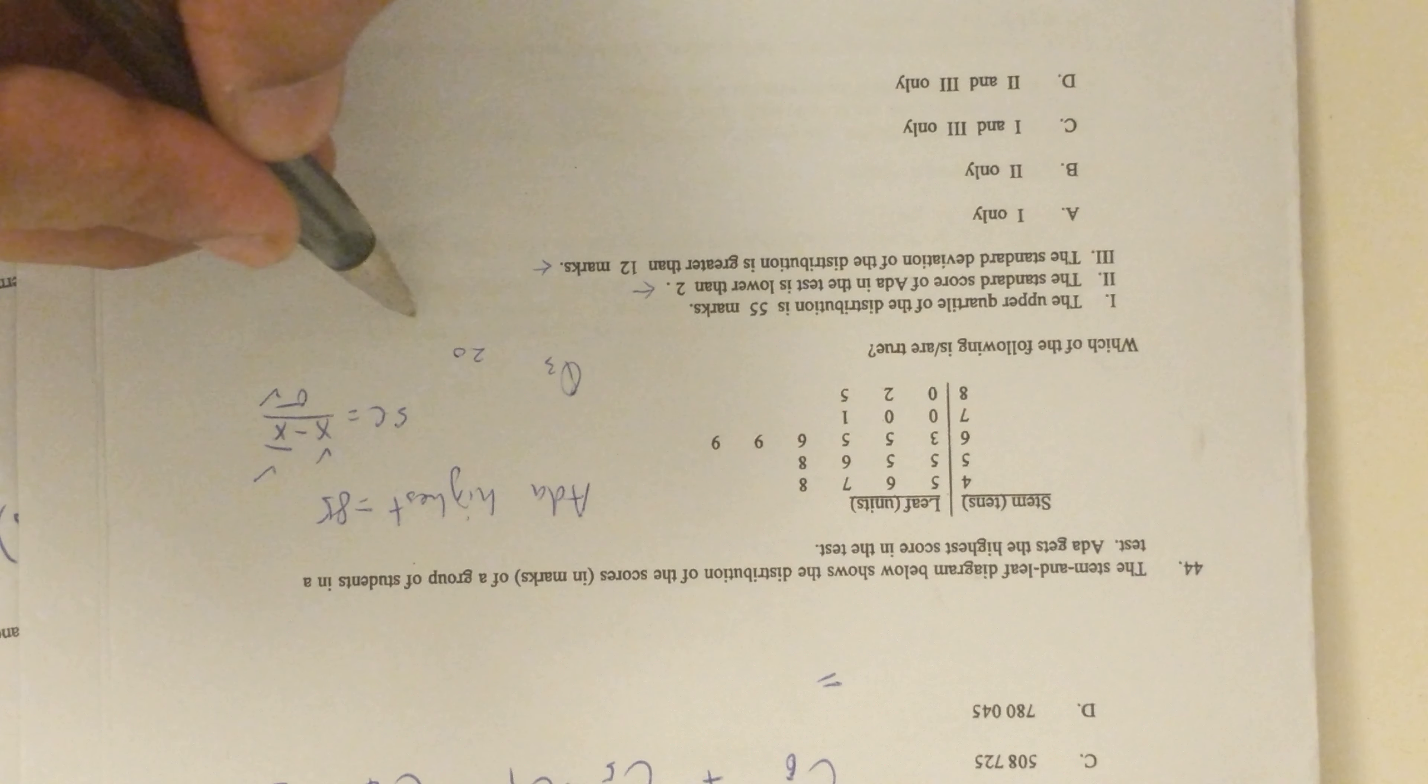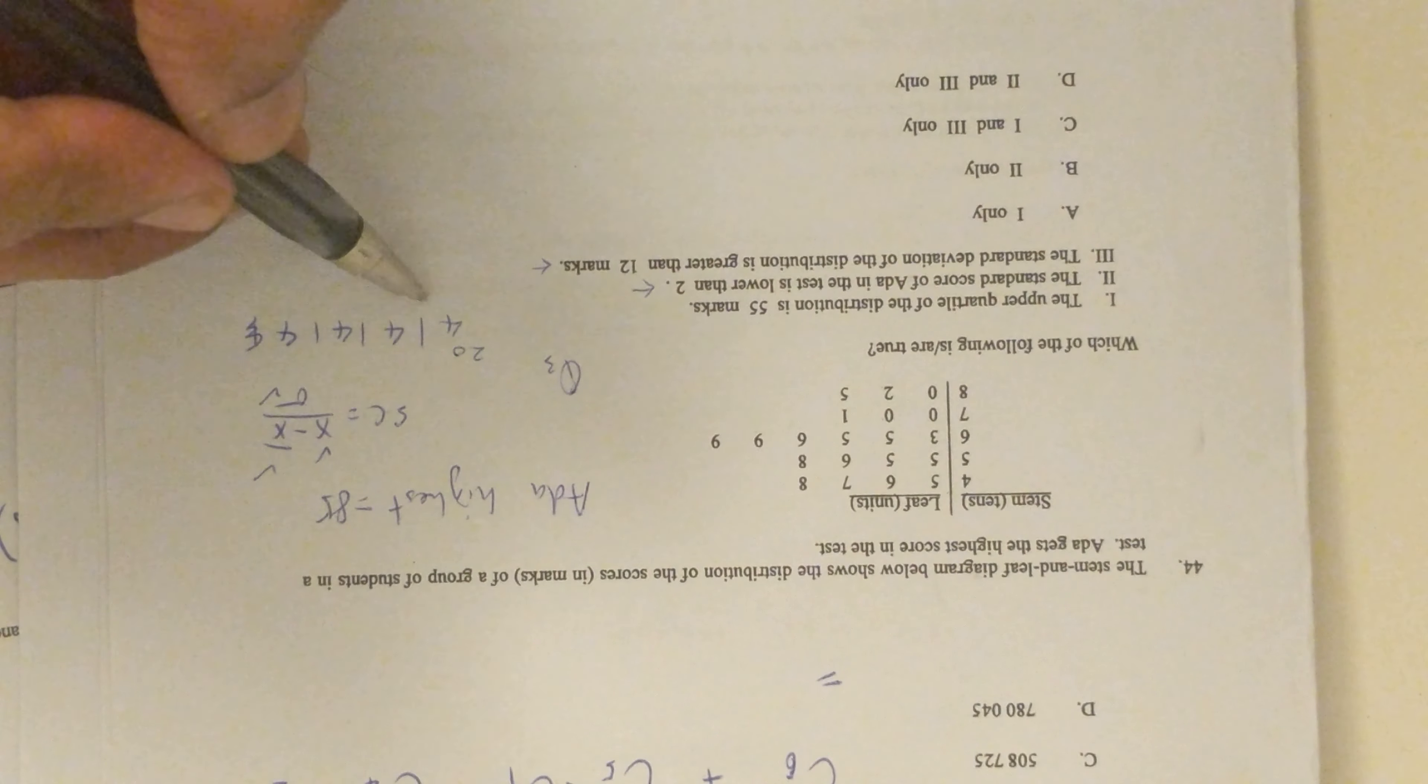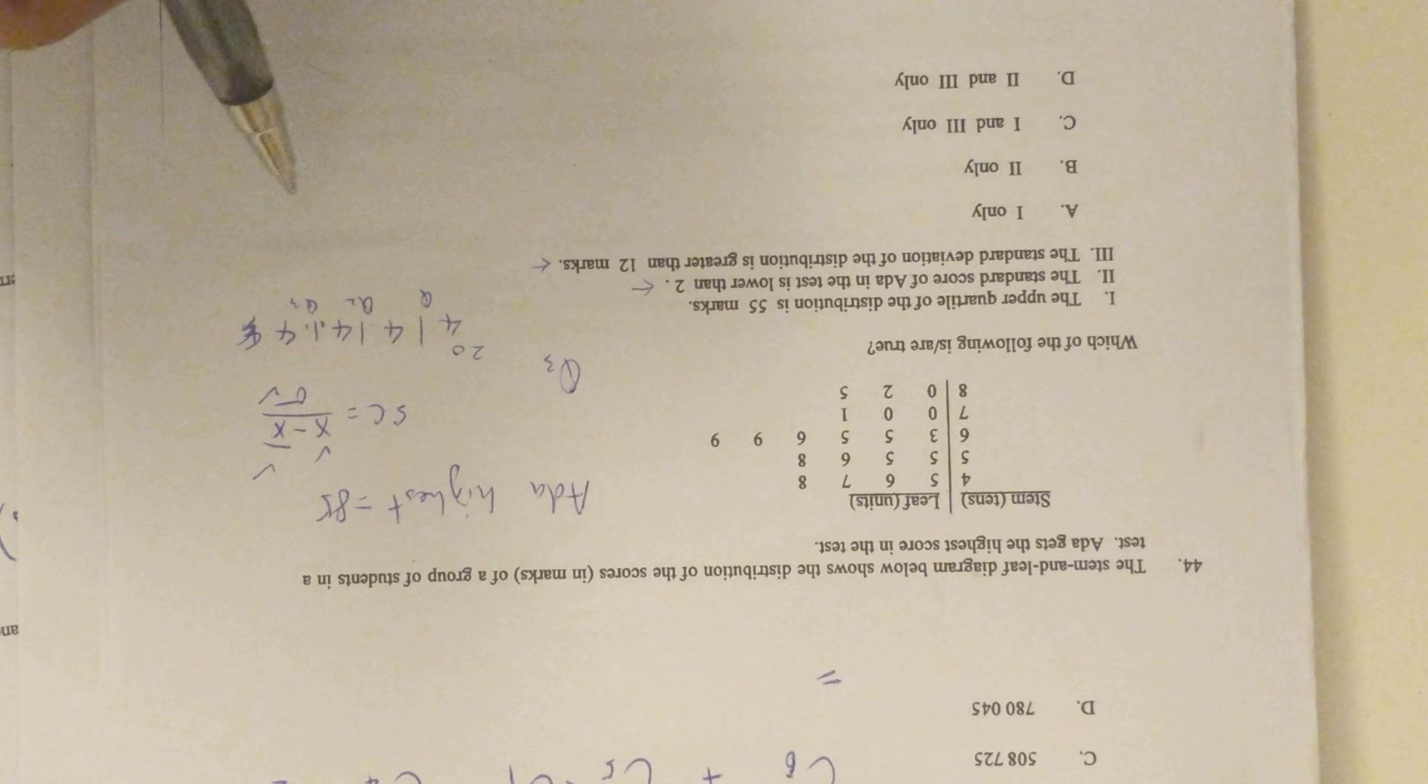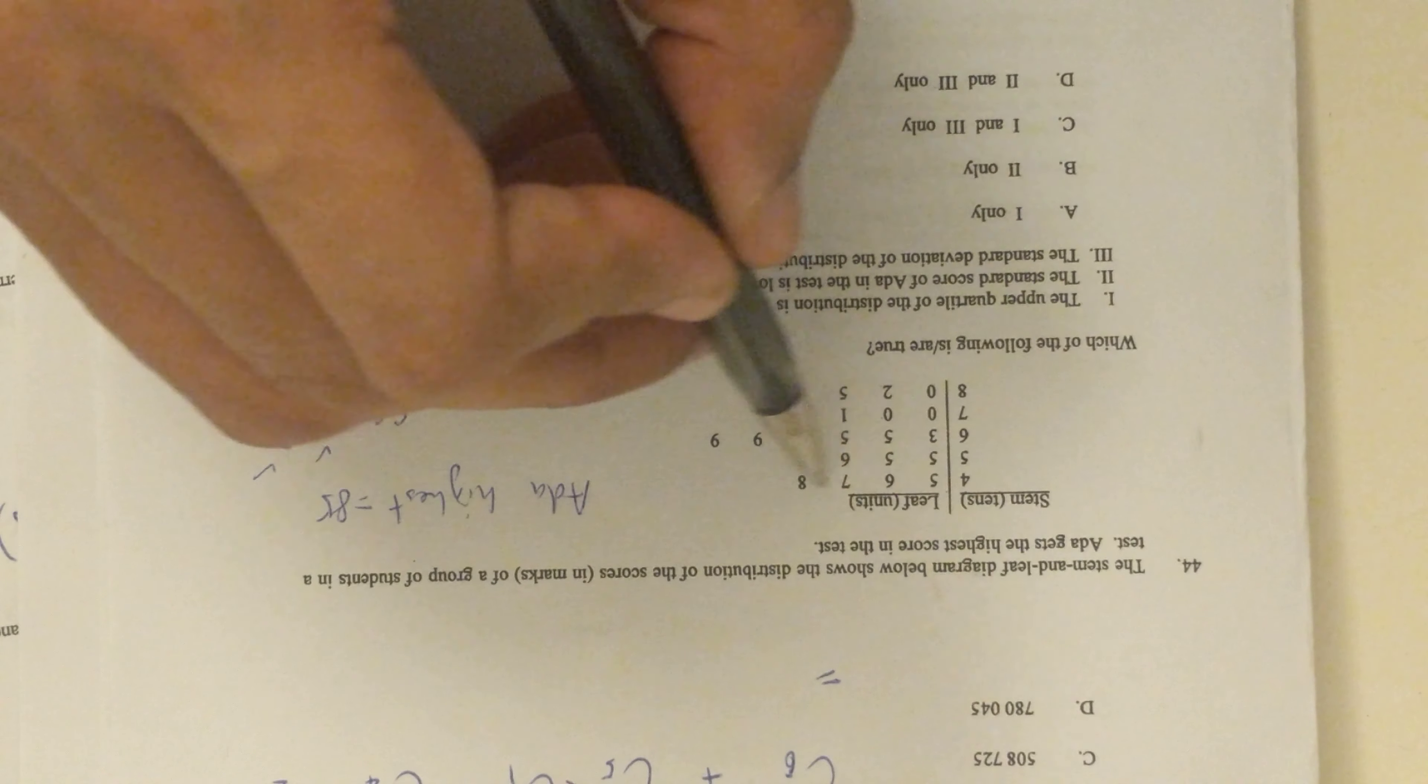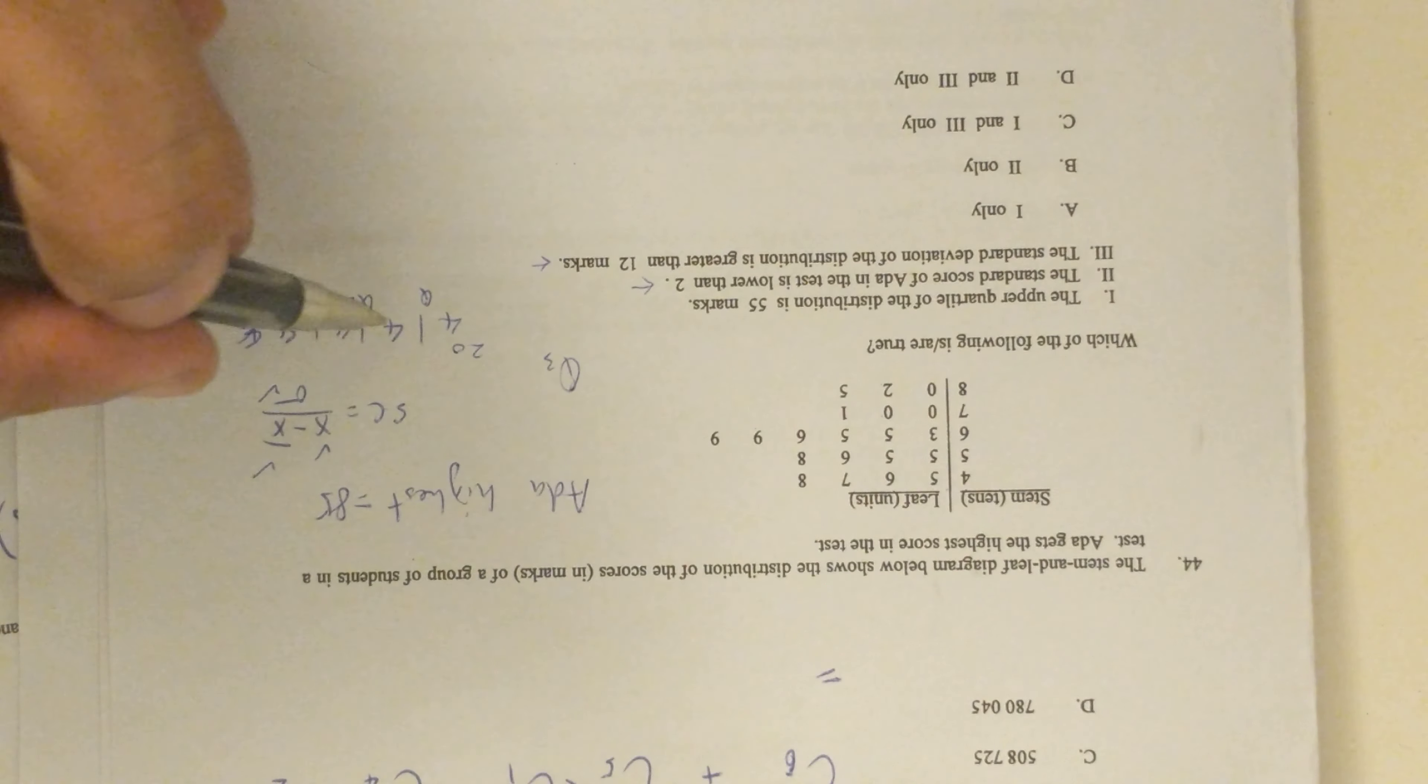You can put them into 4 separate parts - so it's 4, 4, 4, 4. This is Q1, Q2, Q3. If I want upper quartile Q3, I need to look for the 12th data and 13th data. So 1, 2, 3, 4, 5, 6, 7, 8, 9, 10, 11, 12, 13, 14, 15, 16, 18, 19, 20.